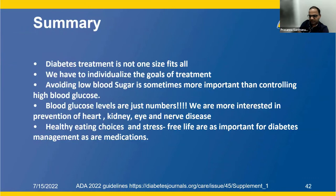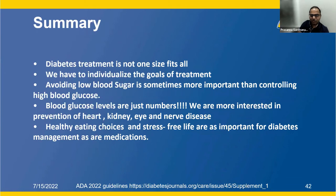In summary: diabetes treatment is not one size fits all — we must individualize goals. Avoiding low blood sugar is sometimes more important than controlling high blood glucose. Glucose levels are just numbers; we are more interested in prevention of heart, kidney, eye, and nerve disease. Healthy eating choices and a stress-free life are as important for diabetes management as medications.